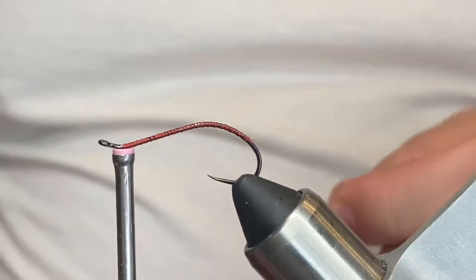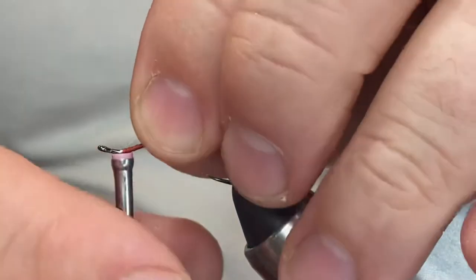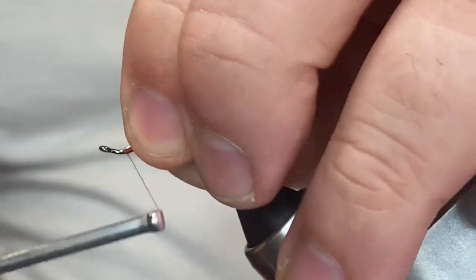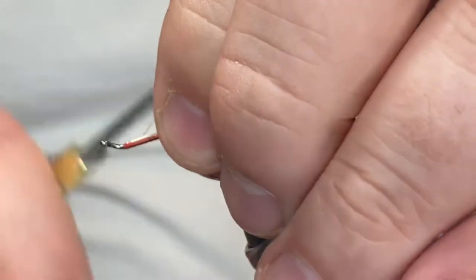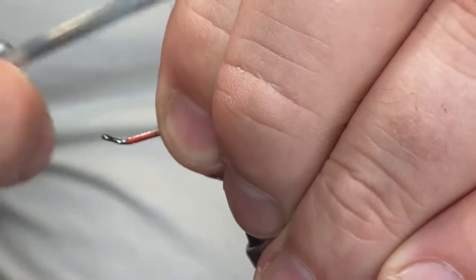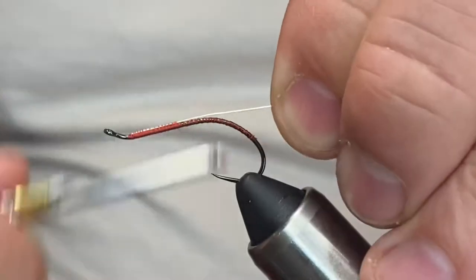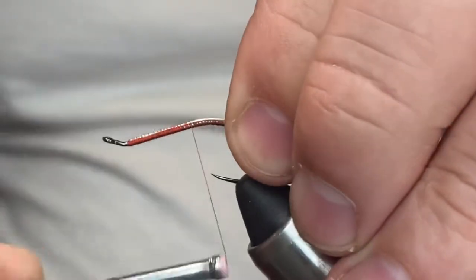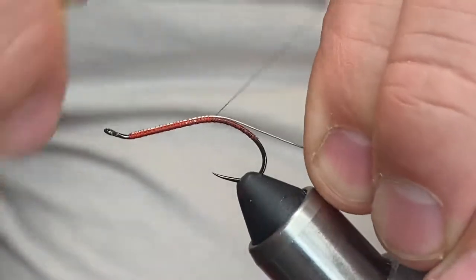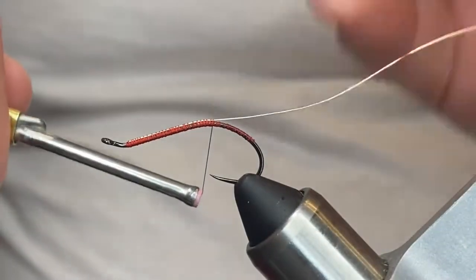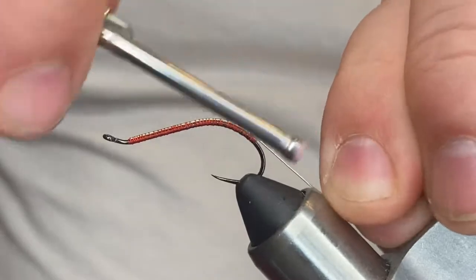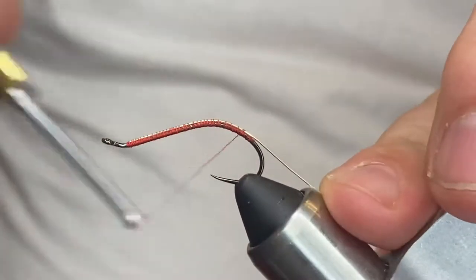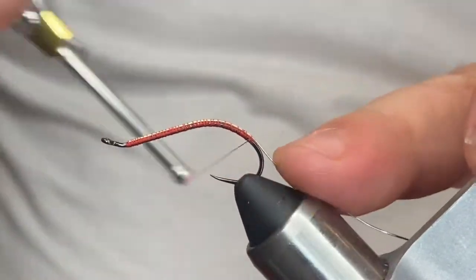Come in with a piece of medium Ultrawire in gold. Catch that right across the top. Try to keep that on the top all the way back to help build a nice smooth body.